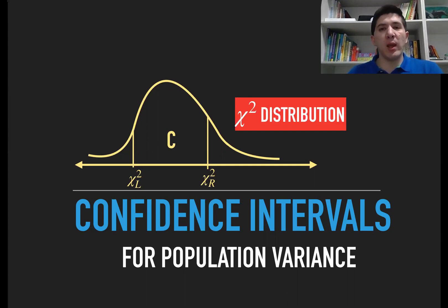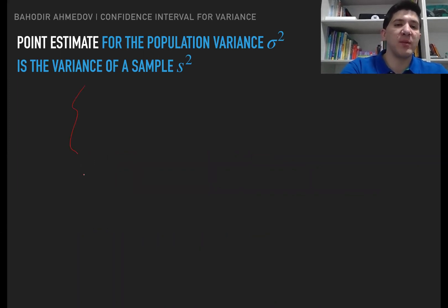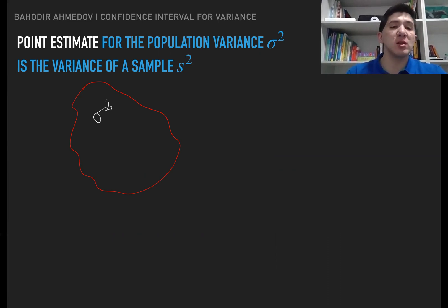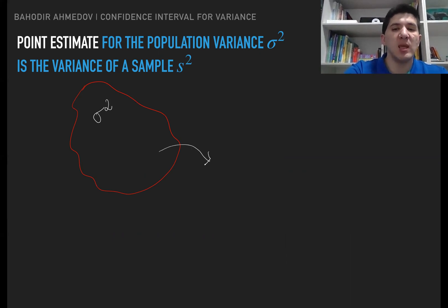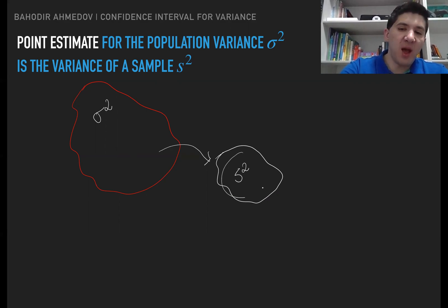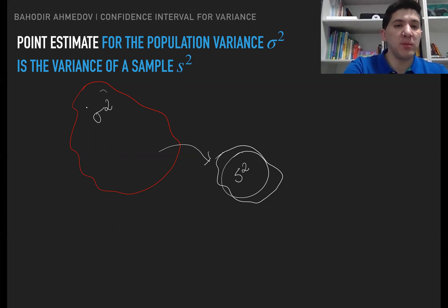The simplest way to estimate the population variance would be to estimate it using one point. So if I have a big sample and I would like to estimate the standard deviation or the variance of the population, what I can do is take a small sample and calculate the variance of the sample. The value of the variance of the sample is going to be my best estimation of the population variance.